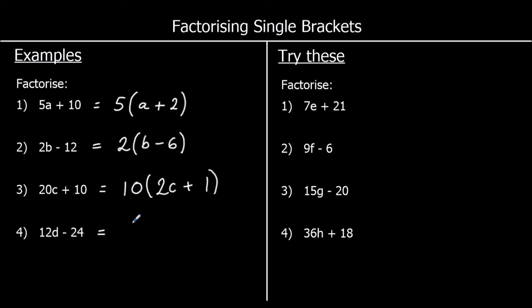Now question 4: we've got 12d minus 24. We want to take out the biggest possible number — we could take out a 2, a 4, or a 3, but we need the biggest possible one. The biggest times table that 12 and 24 are both in is 12. So we take 12 outside. 12 times d is 12d, and 12 times what makes negative 24? That's negative 2.